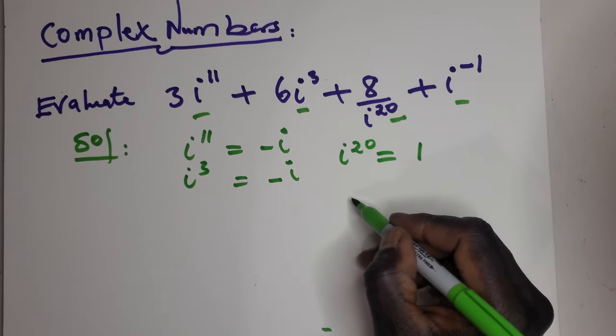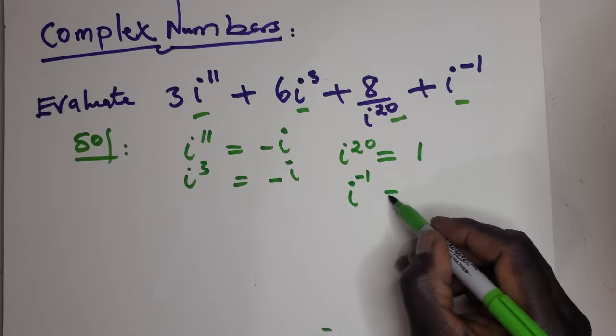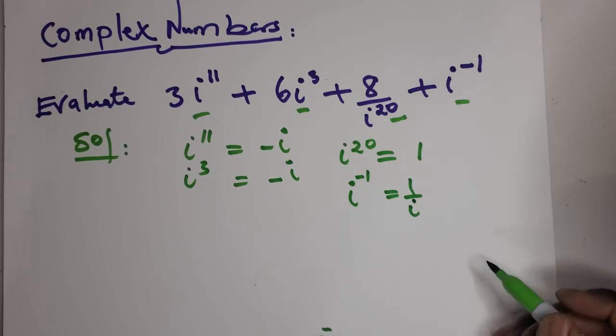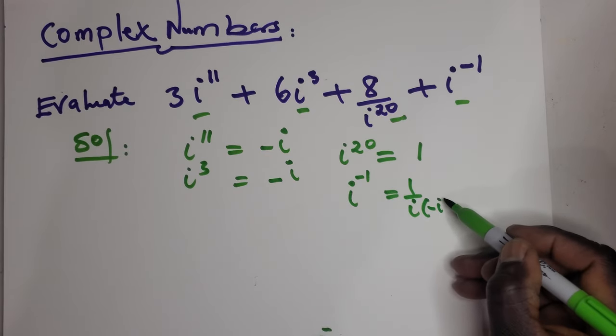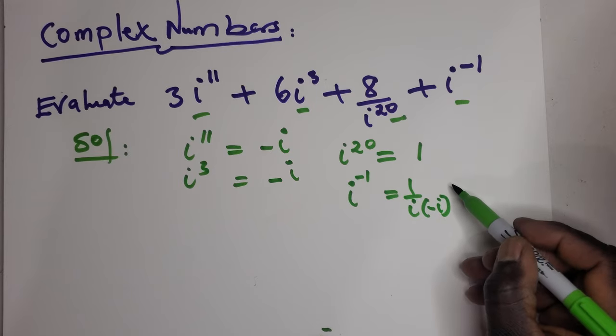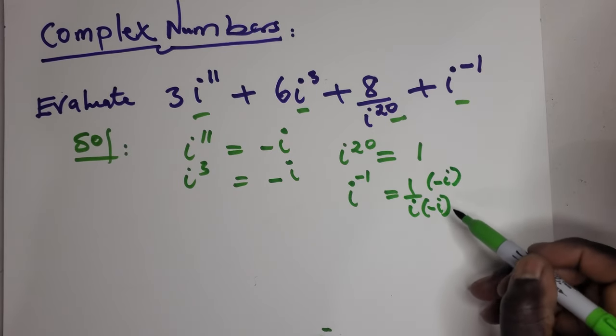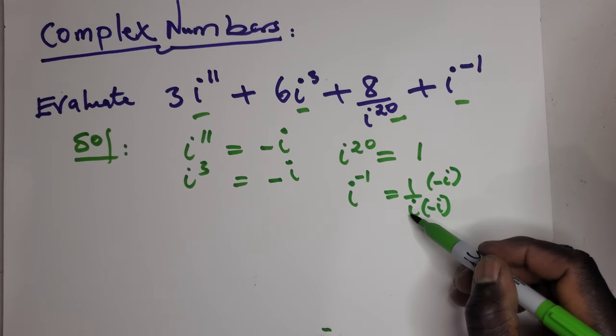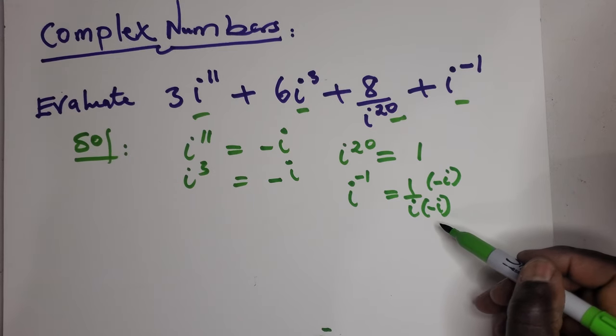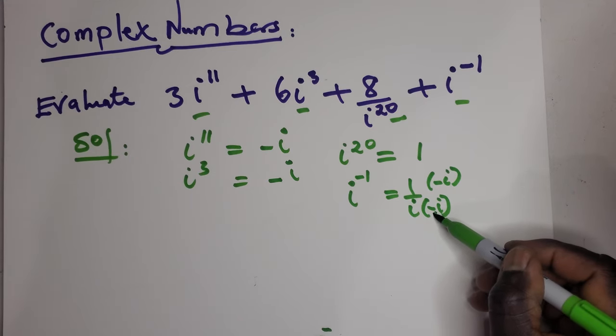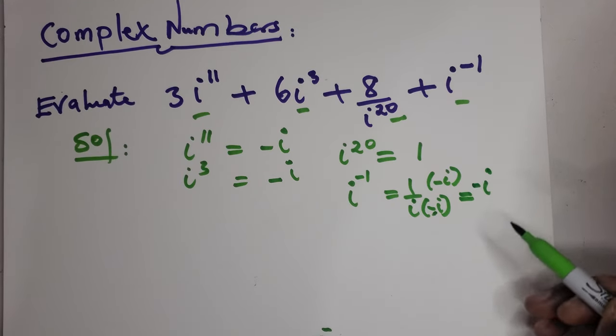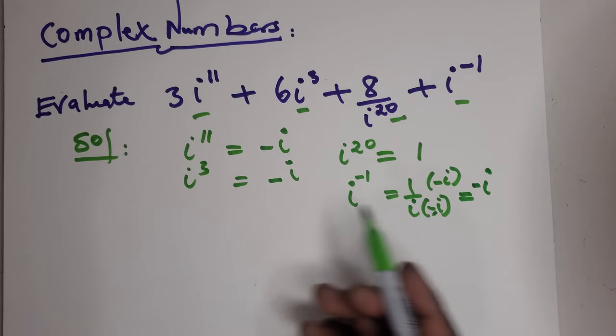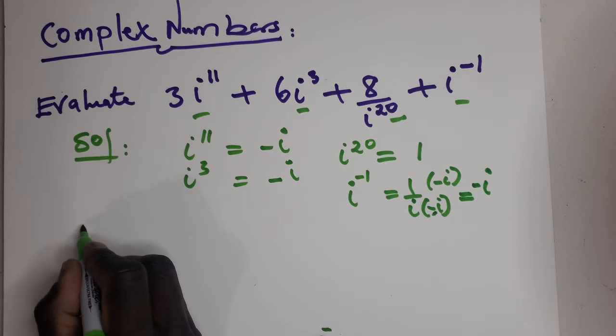What you have to do, i to the negative 1 is the same as saying 1 over i, but you have to get rid of the i at the bottom. So multiply by the conjugate, which is negative i times negative i. Up top, when you cancel out, it's just 1. So i times i is negative 1 times negative 1, gives you positive. So the whole thing here will be negative i. So let's rewrite it. So now 3...